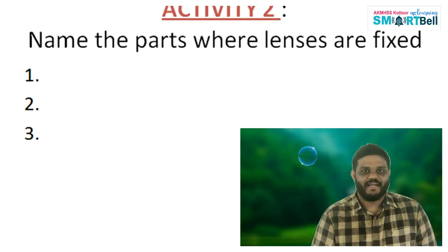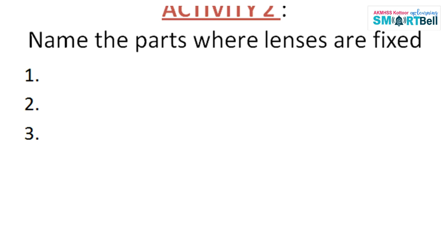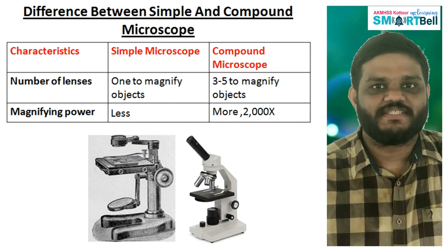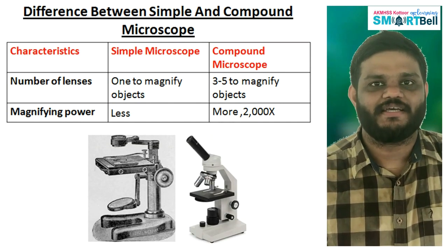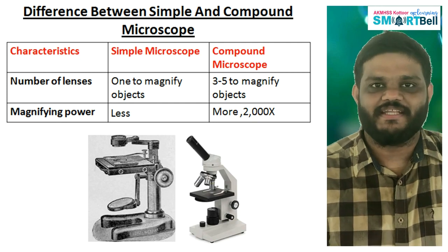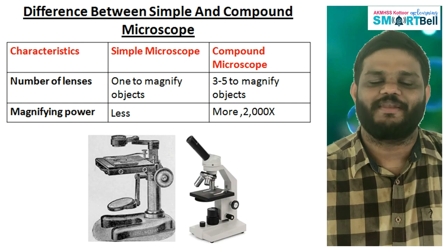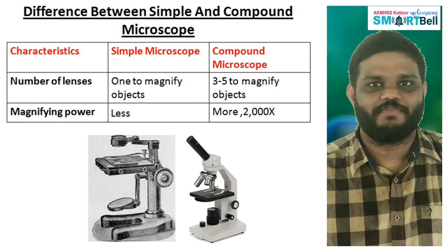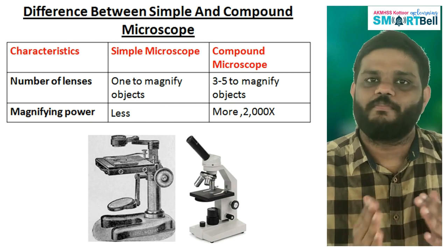Let's do the second activity: name the parts where lenses are fixed in a microscope. Please do the third activity as well — find out the answers for the first and second questions. Now, we are going to study two new terms: simple microscope and compound microscope. A simple microscope uses only one lens, but a compound microscope uses many lenses. So the magnification power of the compound microscope is higher compared to the simple microscope.